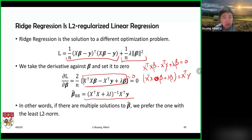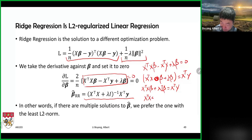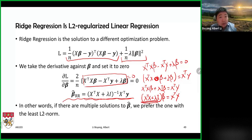Instead, we write lambda times I — the identity matrix — times beta. Now we can extract the common multiplicative factor: (X-transpose X plus lambda I) times beta equals X-transpose y. Taking the inverse of the left matrix — which we know exists — and multiplying both sides, we find the solution for ridge regression.